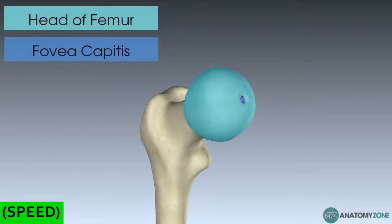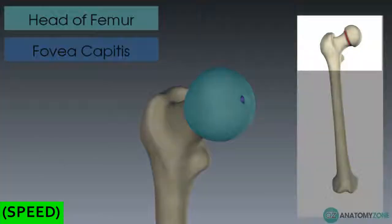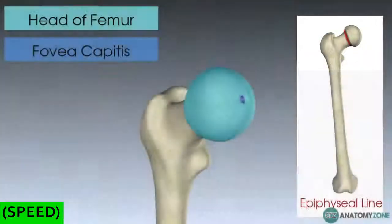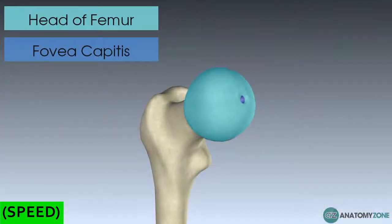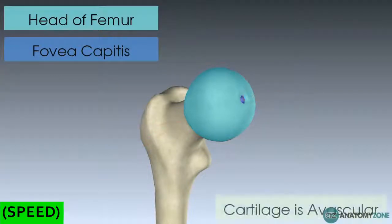The fovea capitis has an important role in blood supply in childhood. When you were a child, the head and neck of the femur are separated by the cartilage of the epiphyseal line — your growth plate. You need two blood supplies: one to the neck of the femur and another to the head, because the cartilage in the middle is avascular and doesn't have blood vessels running through it.